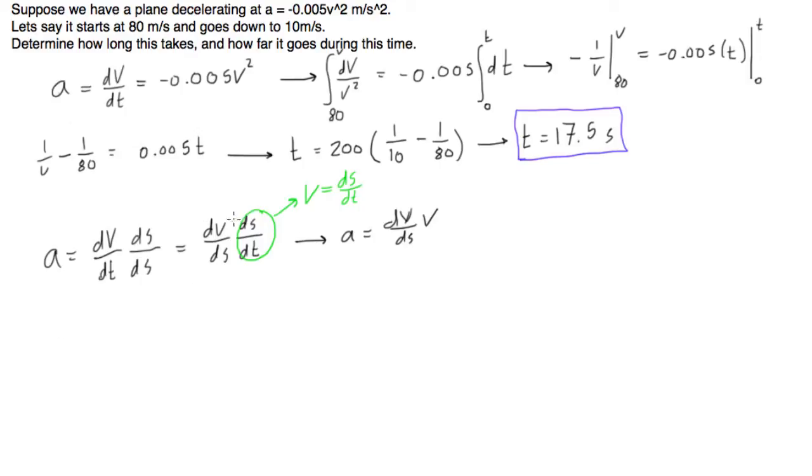We knew that acceleration, well here, acceleration was negative 0.005v squared equals v dv/ds. Let's put all the v's on one side and all the s's on the other. So we get negative 0.005 ds equals v over v squared dv. One of these v's is going to cancel out, so we can rewrite this as 1 over v.